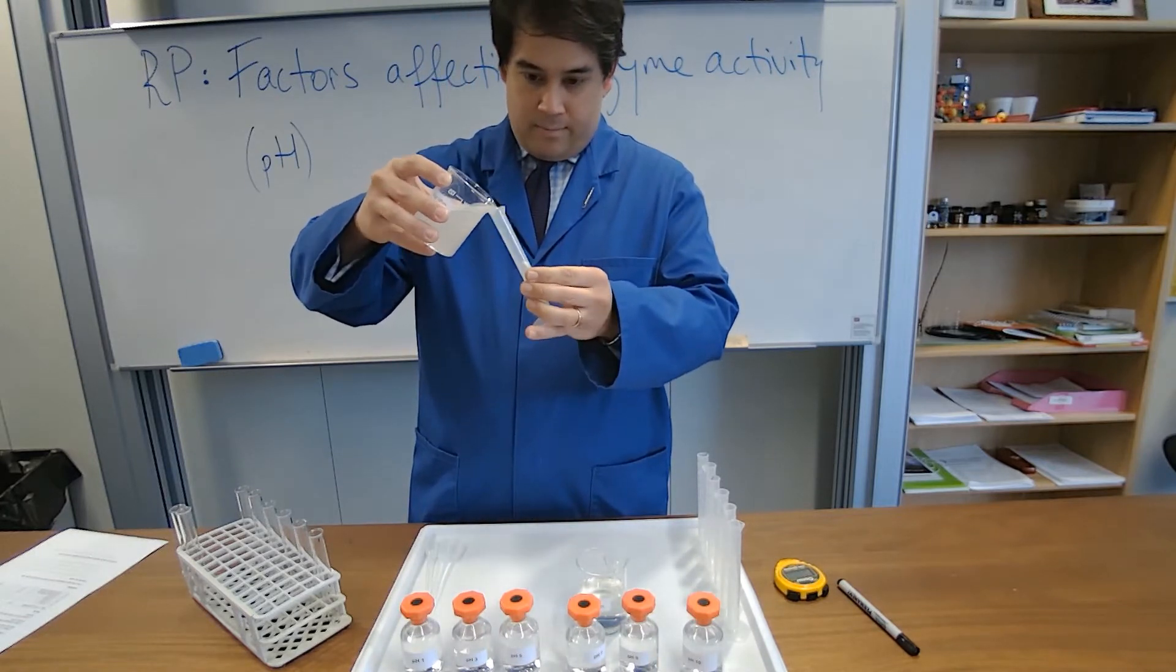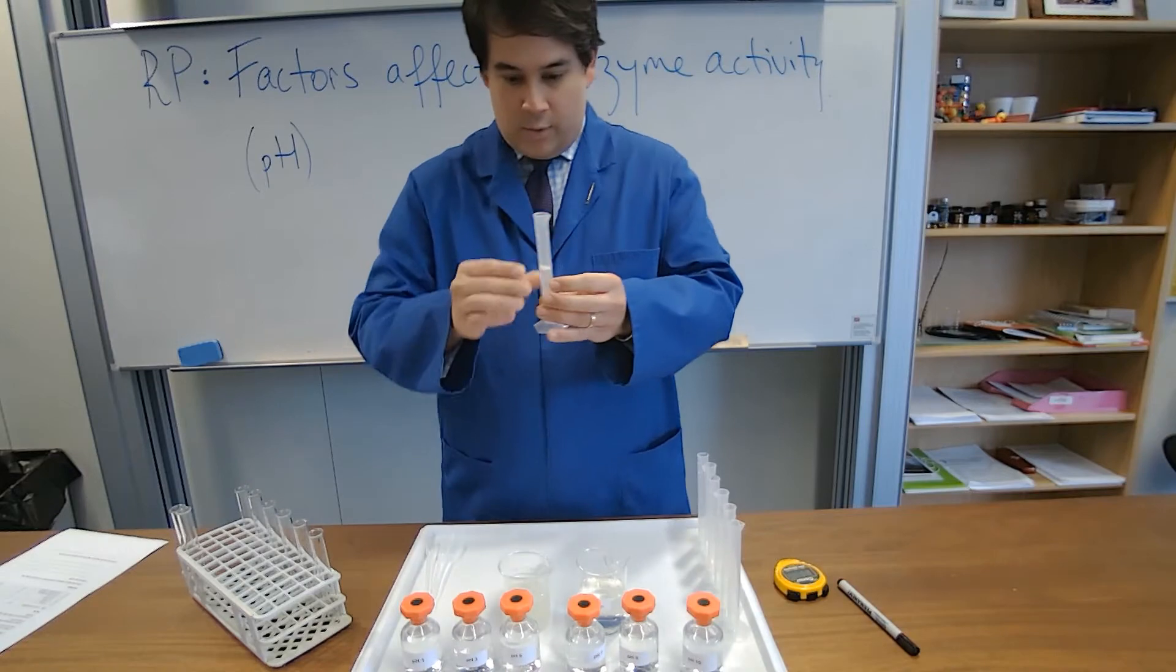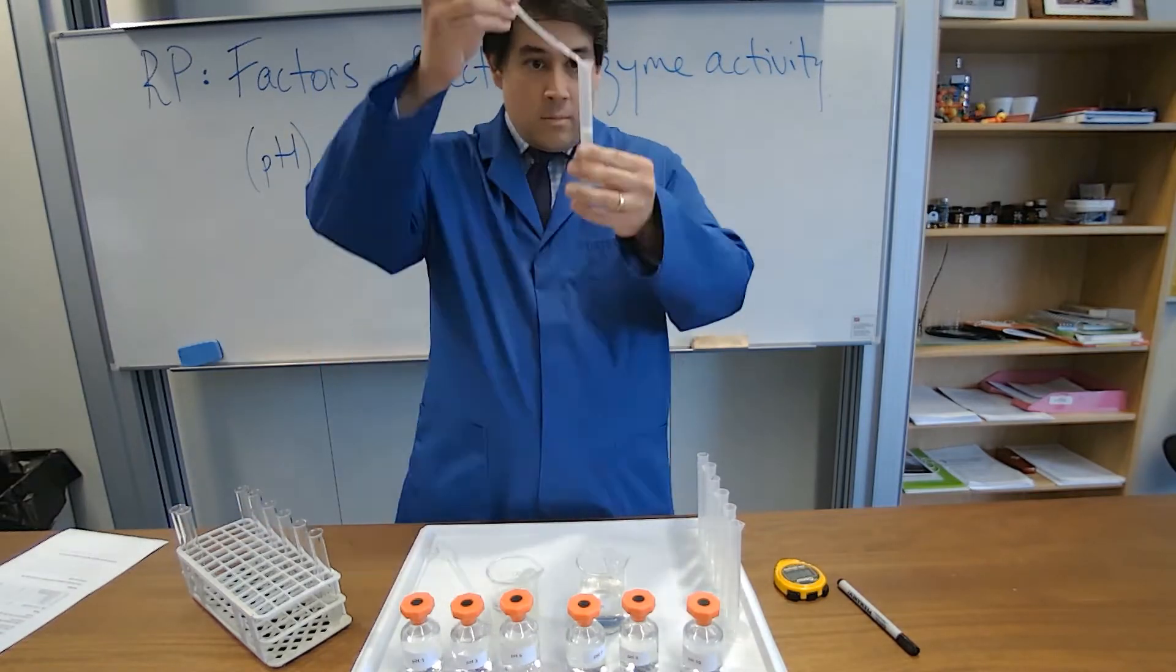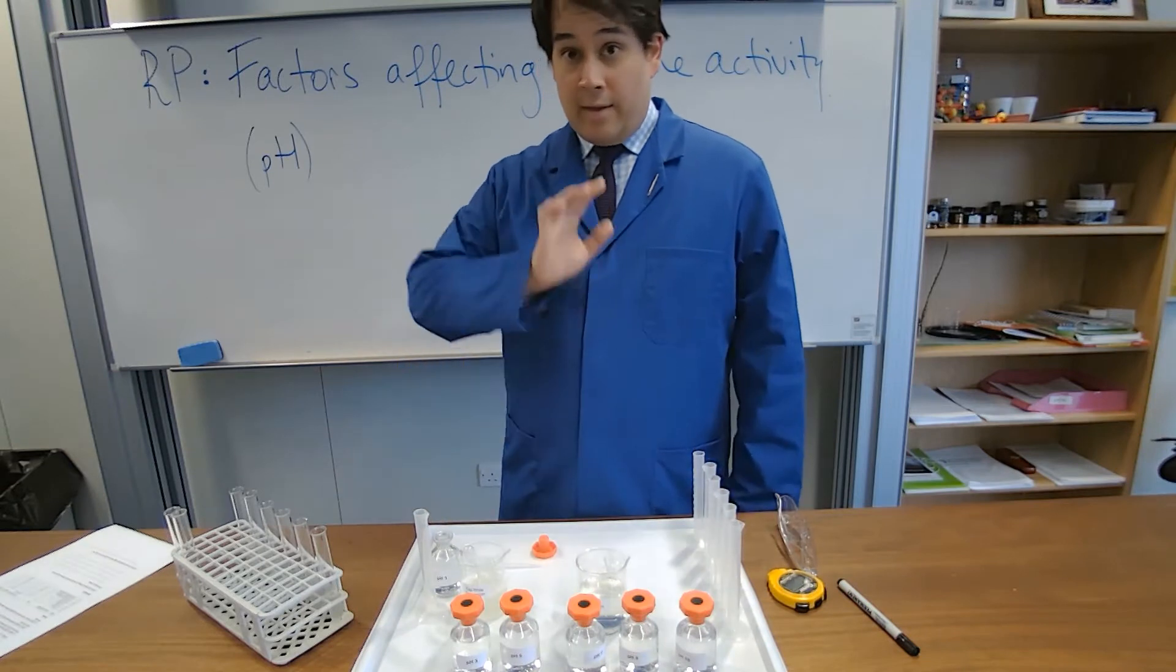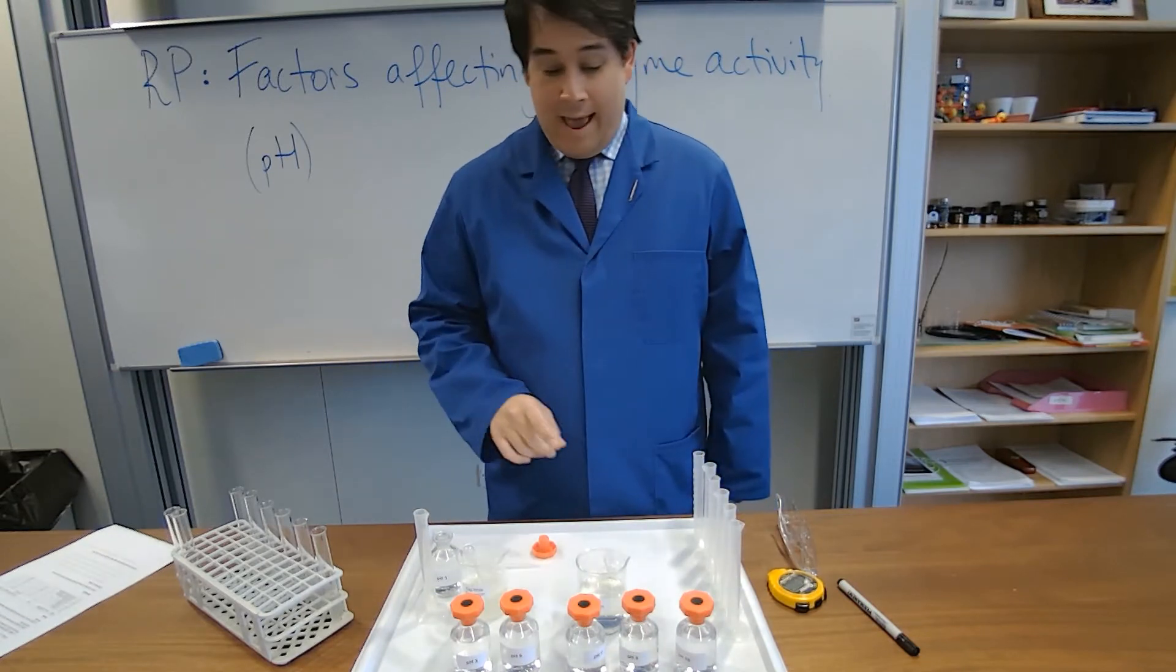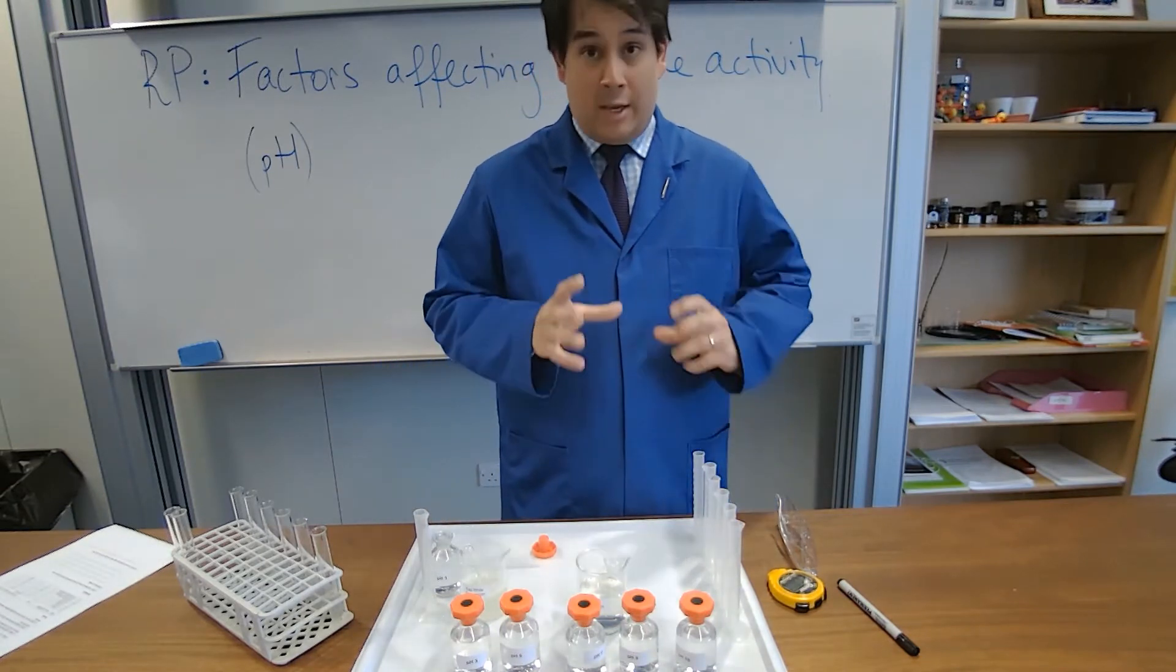We're going to have five ml of albumin to each one. Now that that is done, we're now going to add some of our buffers, which is pH buffers.